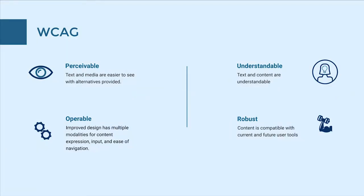WCAG is split into four modalities or aspects. The first is perceivable — texts and media are easier to see with alternatives provided. The second is operable — multiple modalities for content, expression, and input are provided, and navigation is relatively easy. The third is understandable — content is understandable. And the last is robust — we want to make sure the software we select is compatible with current and future accessibility tools. Because this course focuses on creating content for blended courses, we're going to work on understandable and perceivable today.